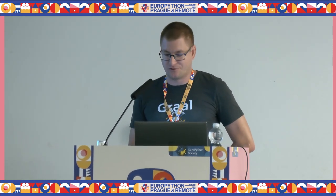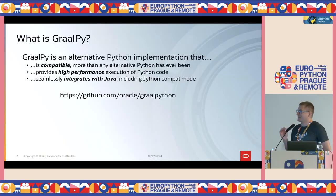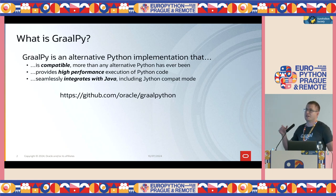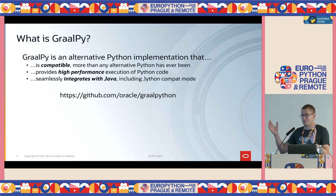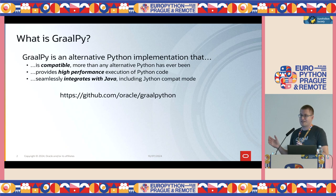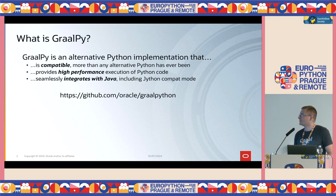I'm a GraalPy developer. I work for Oracle Labs, and we work on GraalPy there, which is a fast Python implementation. GraalPy is an alternative implementation of Python. The Python you know and are used to is called CPython — that's the reference, the standard implementation. We are a clean room implementation of the same.